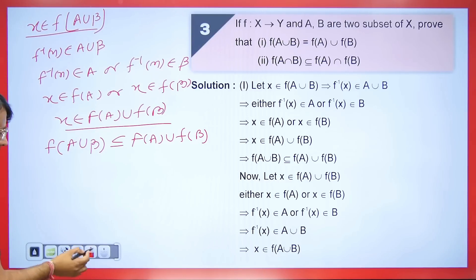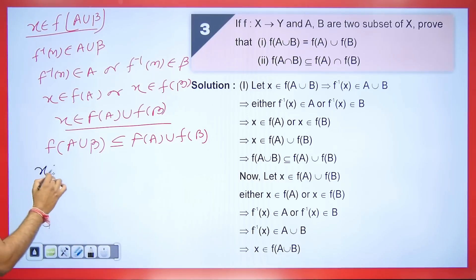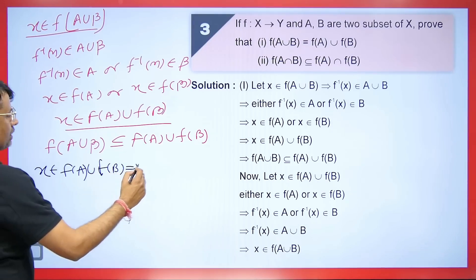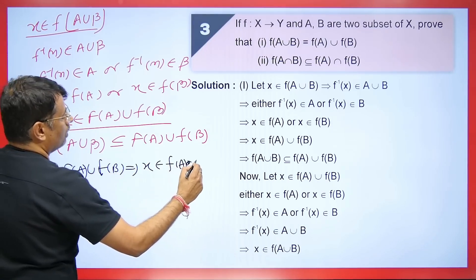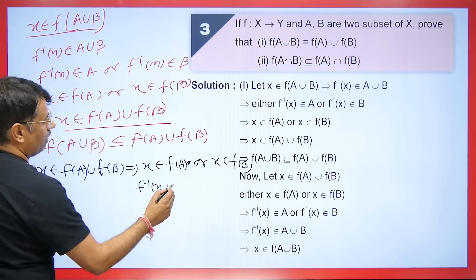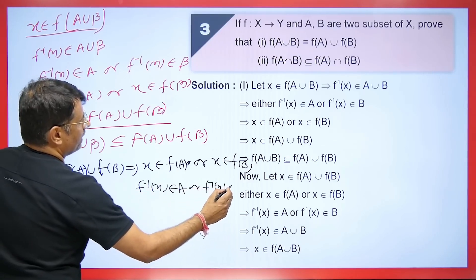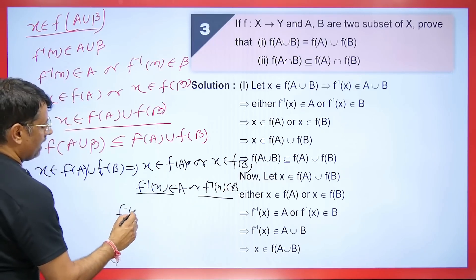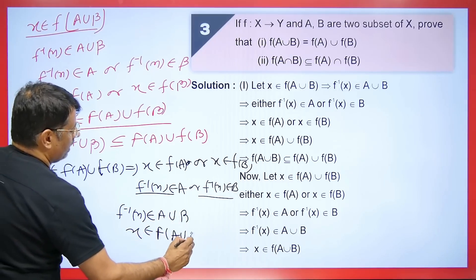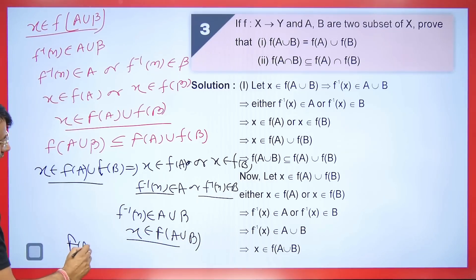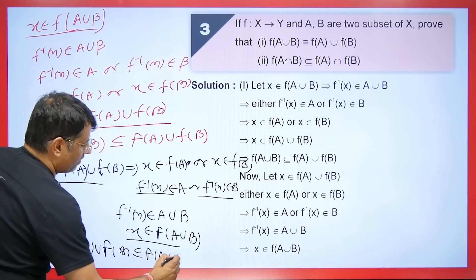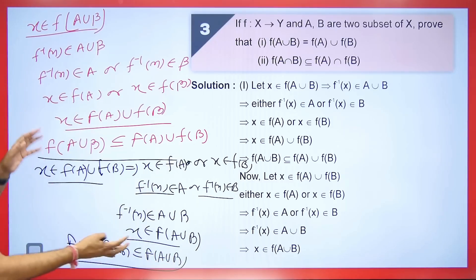Now let's prove the reverse direction. Assume x ∈ F(A) ∪ F(B), which means x ∈ F(A) or x ∈ F(B). This implies F⁻¹(x) ∈ A or F⁻¹(x) ∈ B, meaning F⁻¹(x) ∈ A ∪ B. Therefore x ∈ F(A ∪ B), proving F(A) ∪ F(B) ⊆ F(A ∪ B). Since each is a subset of the other, they are equal.